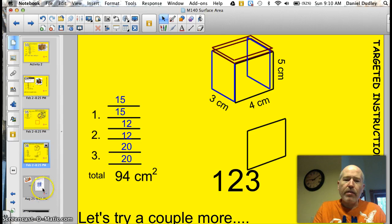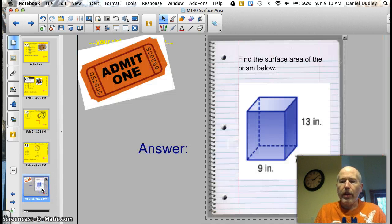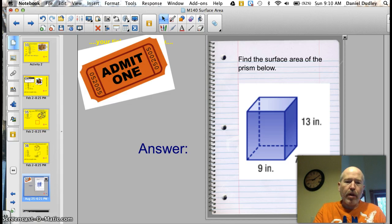Instead of trying a couple more, let me just have you try the ticket to the show. Find the surface area of this prism. Remember, 1, 2, 3. Double the area of each side, because you've actually got two. Add them up. Make sure you've got it labeled correctly. The ticket to the show.